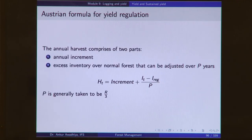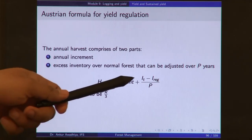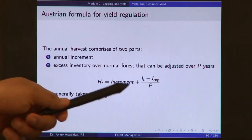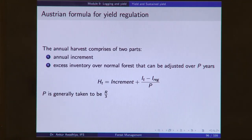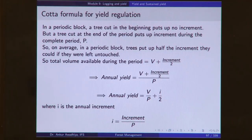We also have the Austrian formula, which says you can extract the annual increment, but you also have to consider the excess inventory over the normal forest that needs to be adjusted. This adjustment is done over a period of P years: the amount extracted every year equals increment plus (It minus I of a normal forest) divided by P. P is generally taken to be one third of the rotation period. Next, we have the quota's formula: growing stock divided by the number of years in the periodic block, plus I/2, where I is the annual increment.